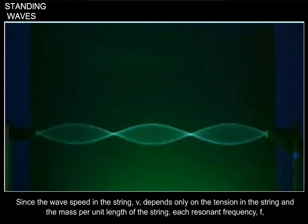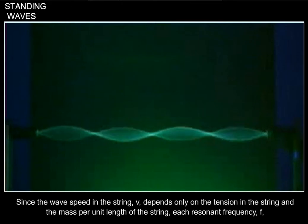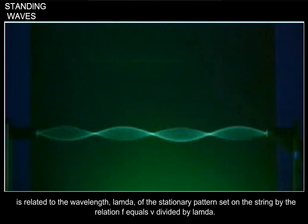Since the wave speed in the string v depends only on the tension in the string and the mass per unit length of the string, each resonant frequency f is related to the wavelength lambda of the stationary pattern set on the string by the relation f equals v divided by lambda.